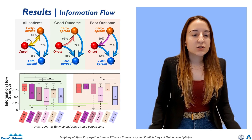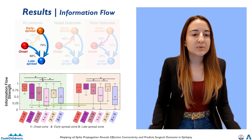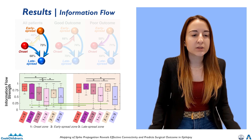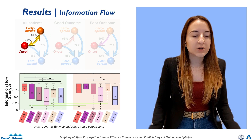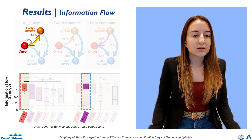Our analysis of the information flow has two main findings. Firstly, in around 70% of patients, the predominant flow direction is from the onset and early spread to late spread, with no prime direction between onset and early spread. Secondly, the flow is higher from onset to early spread in patients with good outcomes, but higher in the opposite direction for those with poor outcomes.